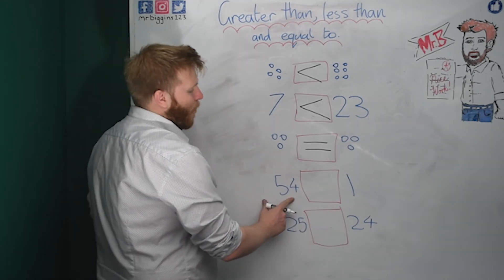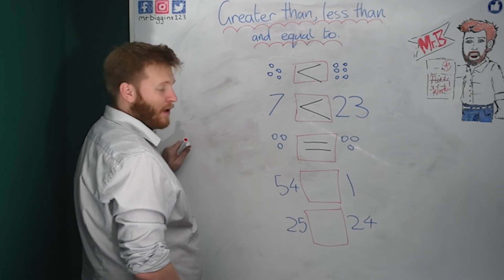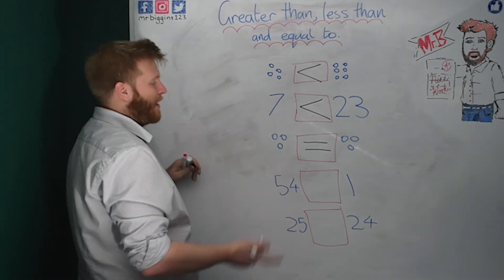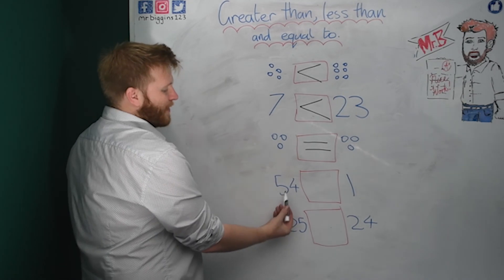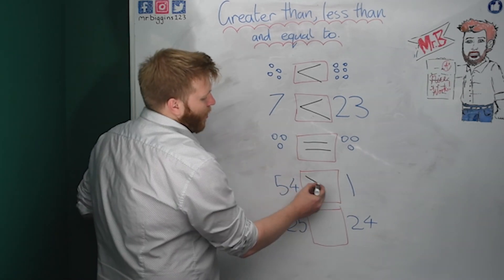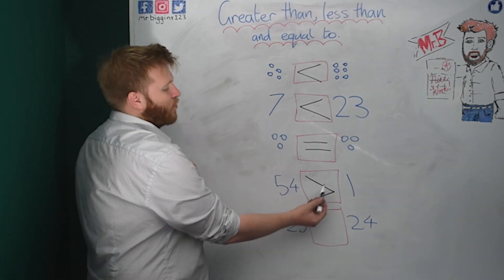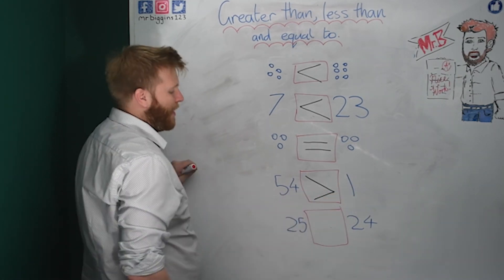Right. This one, we have fifty-four and one. This side, much bigger than one, isn't it? It'll take a long time to count from one to fifty-four. Again, we've got tens and ones. We've only got ones here. So we would put this symbol in. The greater than symbol. Because fifty-four is greater than one. Crocodile's eating the big number.